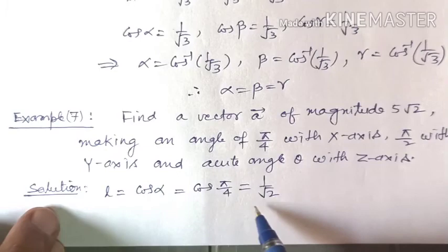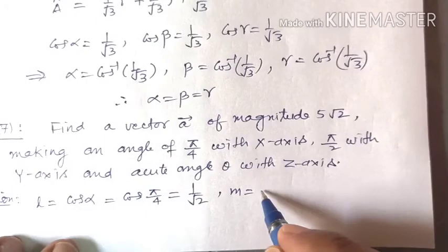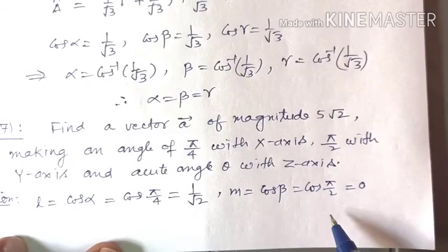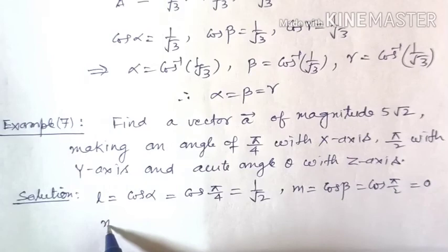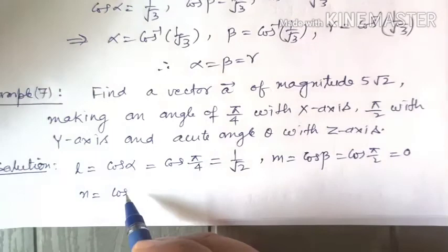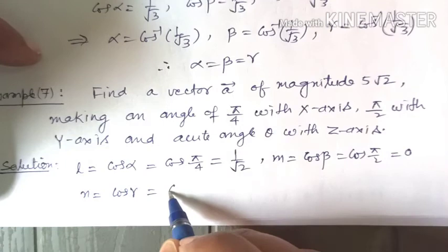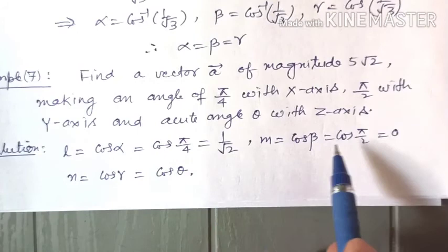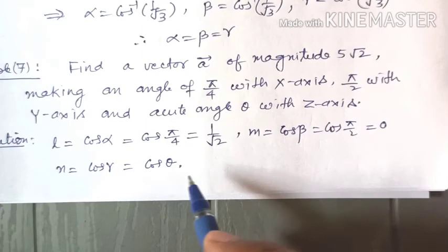The direction cosine m equals cos beta equals cos(pi/2) equals 0. And n equals cos gamma equals cos theta. We know l and m, but n is unknown. Using the property of direction cosines that l squared plus m squared plus n squared equals 1: (1/√2) squared plus 0 squared plus n squared equals 1, giving n squared equals 1/2, so n equals 1/√2.